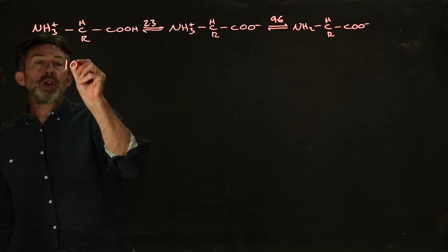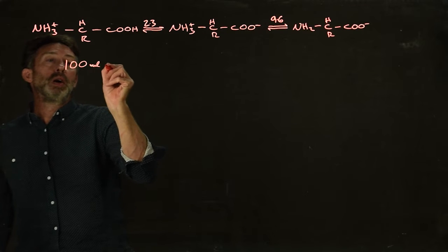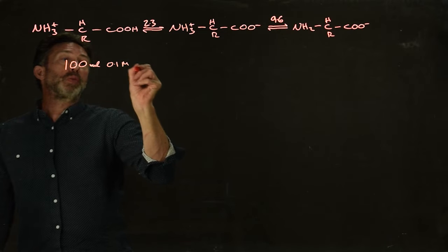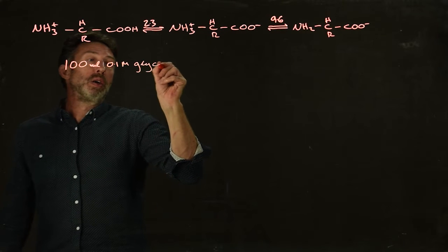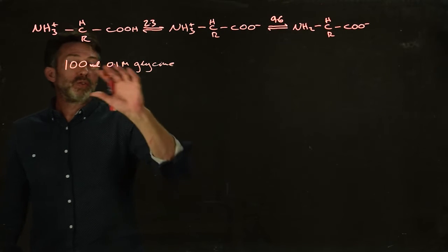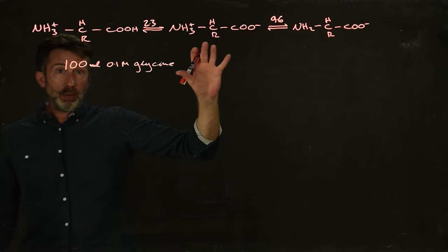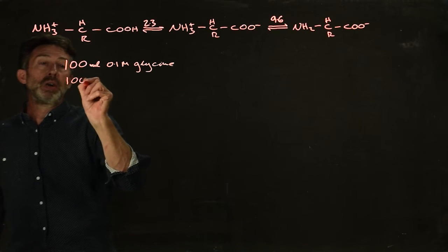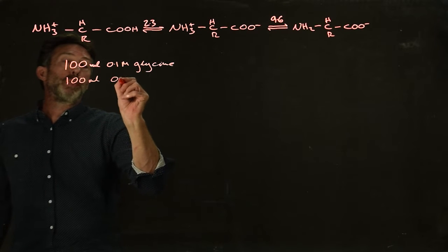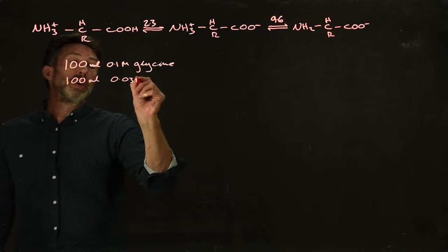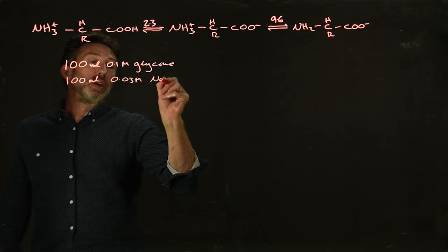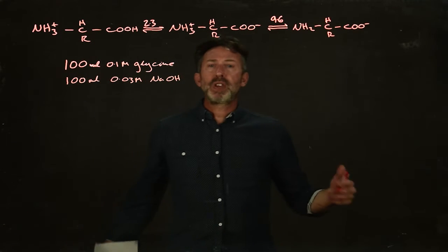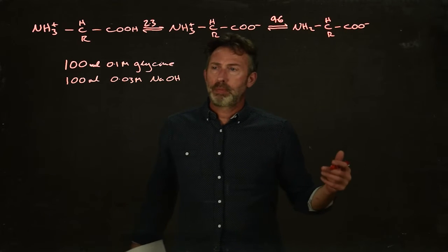Let's imagine that we had 100 ml of 0.1 moles per liter glycine. So we've got 100 ml of 0.1 moles per liter of the amino acid, and to that we're going to add 100 ml of 0.03 moles per liter sodium hydroxide. What will the pH be of this solution—this glycine and sodium hydroxide mix?